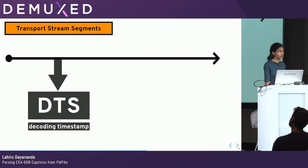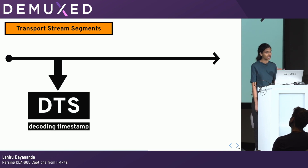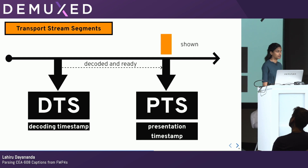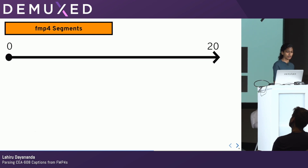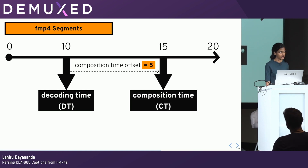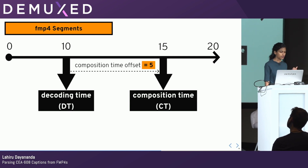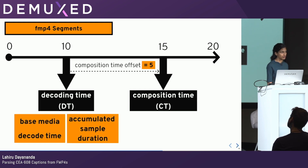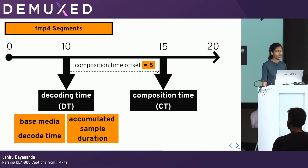In TS, you have a decoding timestamp that tells the decoder when exactly you can decode a piece of information, after which it's ready to be shown, and then you'll use the presentation timestamp to actually display it. In FMP4s, however, you don't have this exact timestamp. Instead, you have a decoding time and a composition time offset, which is the difference between the decoding time and the composition time when you actually show the piece of information. So in our example, 10 plus 5 gives us a composition time of 15. The decoding time is made up of a couple of things: the base media decode time, which you can think of as the first timestamp in the segment, and the accumulated sample duration.